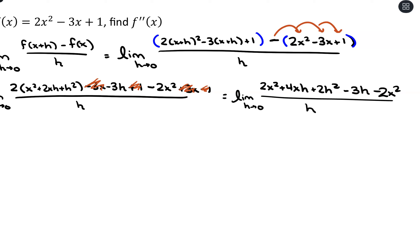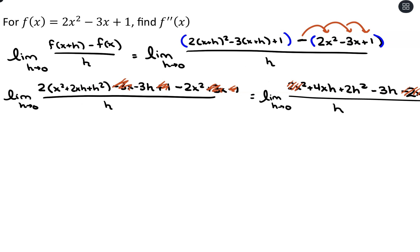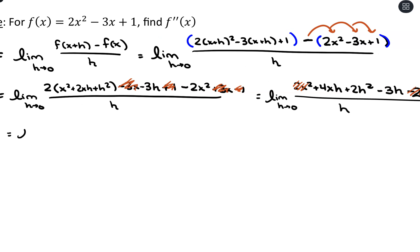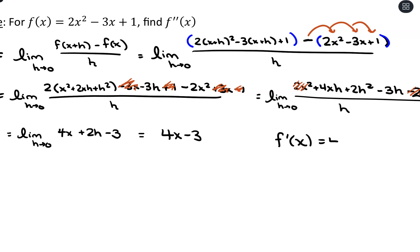The 2x² terms cancel out, and canceling out an h, we'll have the limit as h approaches 0 of 4x plus 2h minus 3. Plugging in h equals 0, we're left with 4x minus 3. All of that was to find our first derivative.